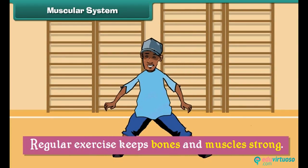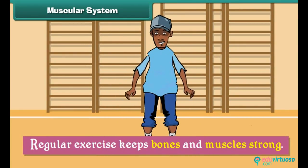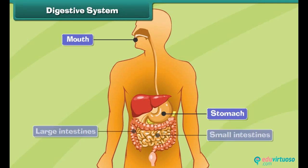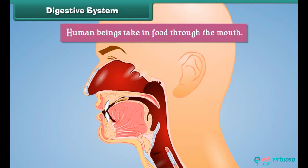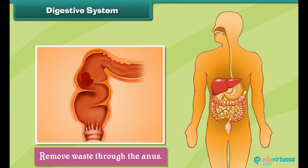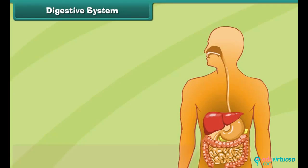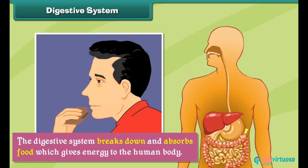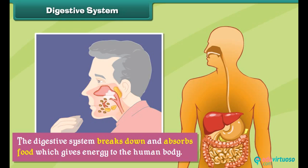The human digestive system consists of the mouth, stomach, intestines, and anus. Human beings take in food through the mouth and remove waste through the anus. The digestive system breaks down and absorbs food, which gives energy to the human body.